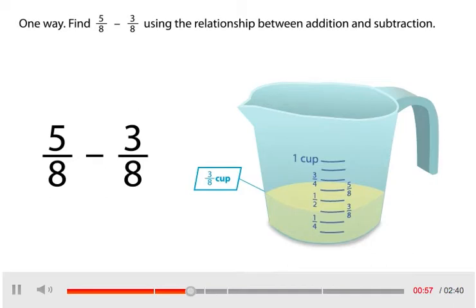One way. Find 5 eighths minus 3 eighths using the relationship between addition and subtraction.